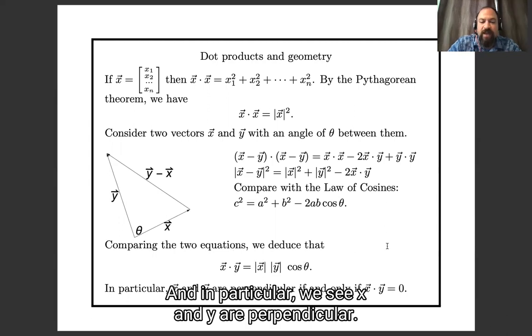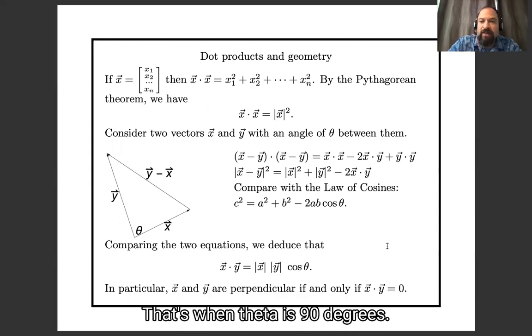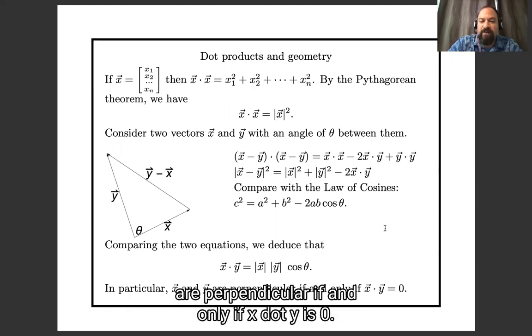And in particular, we see x and y are perpendicular, that's when theta is 90 degrees, so cosine theta is zero, x and y are perpendicular, if and only if x dot y is zero.